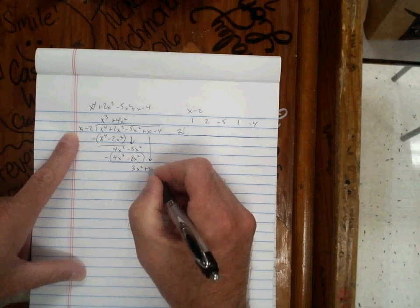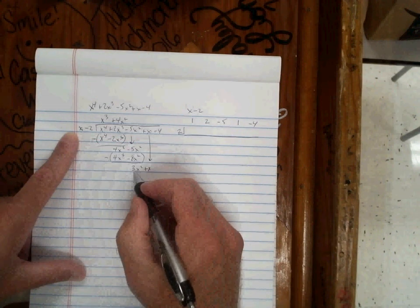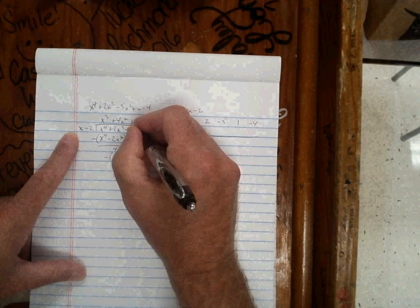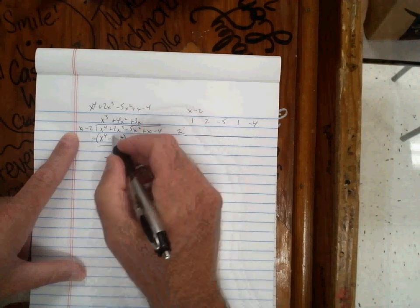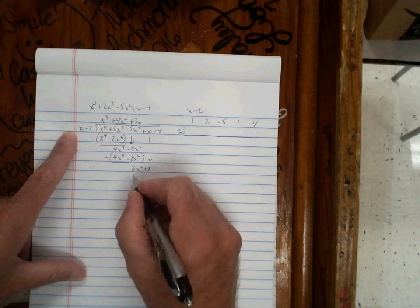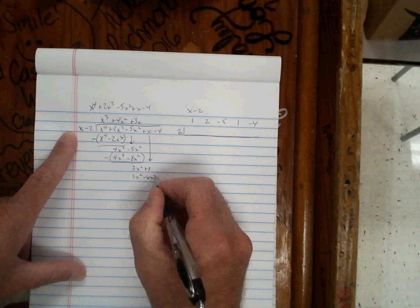Bring down the x. x times 3x squared makes 3x squared. So that goes here. 3x times x minus 2 gives me 3x squared minus 6x. And I subtract that.